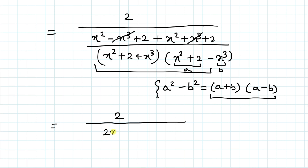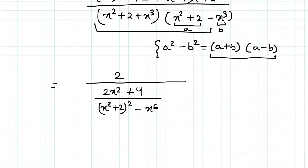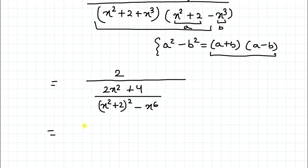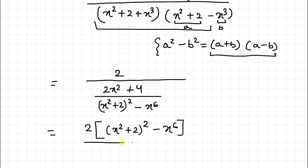After simplification, we have: (2x² + 4) divided by (x² + 2)² − x⁶. Taking the reciprocal, this becomes: 2 multiplied by [(x² + 2)² − x⁶] divided by [2 multiplied by (x² + 2)].